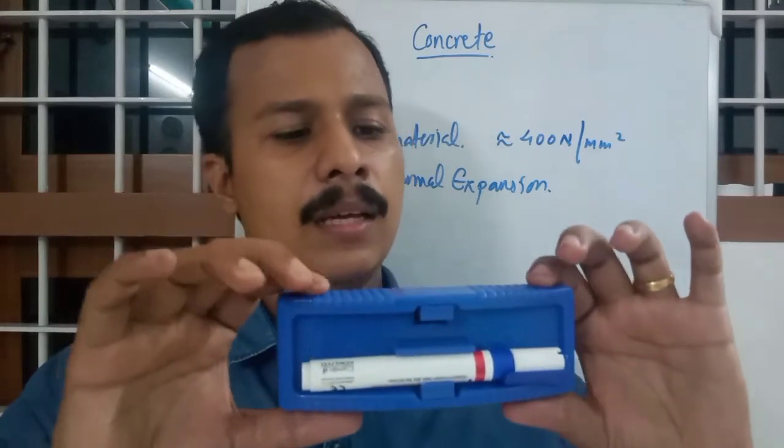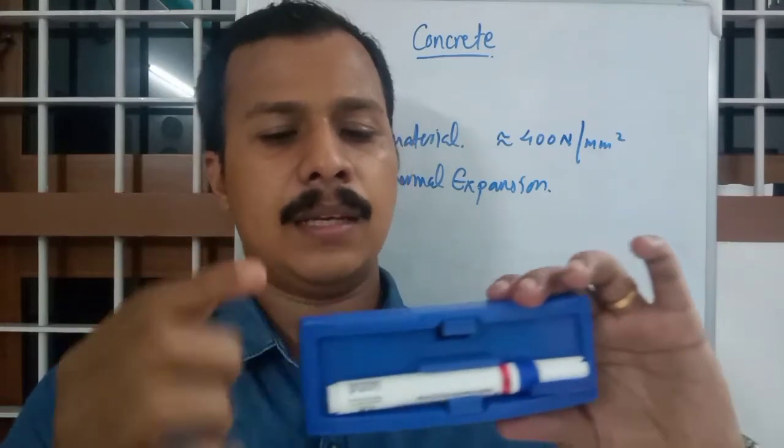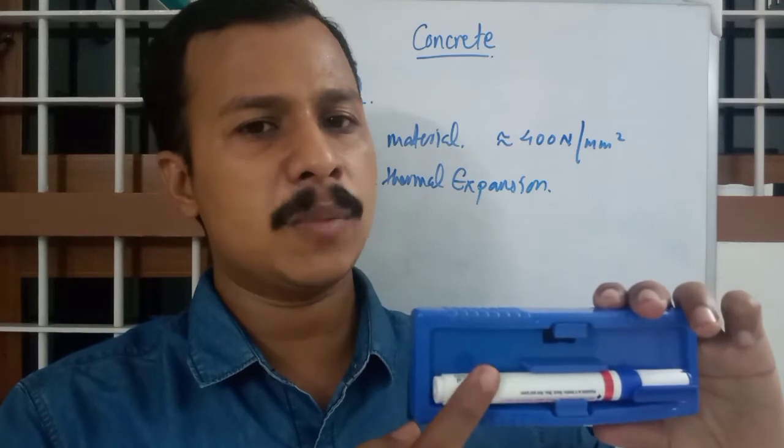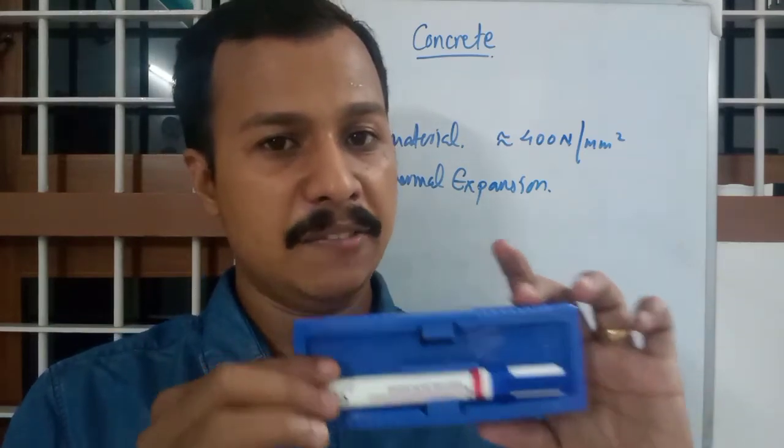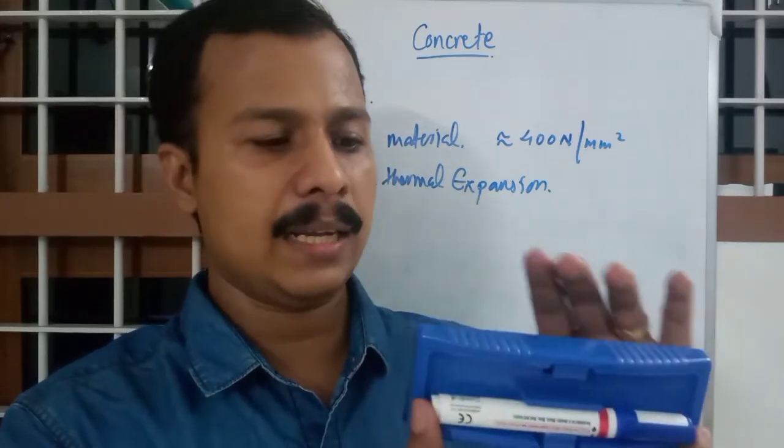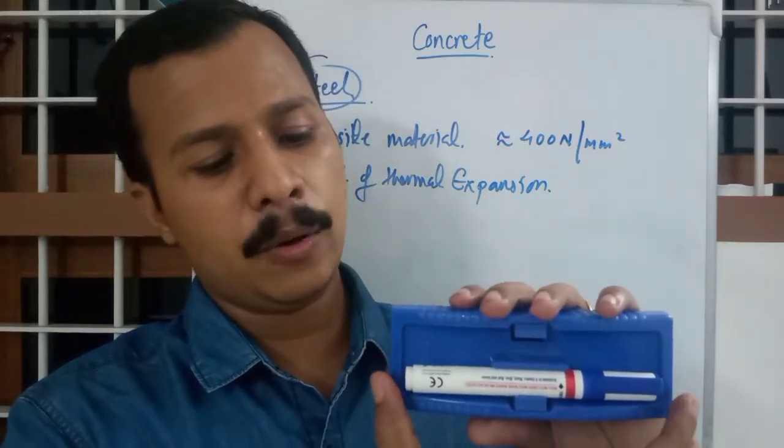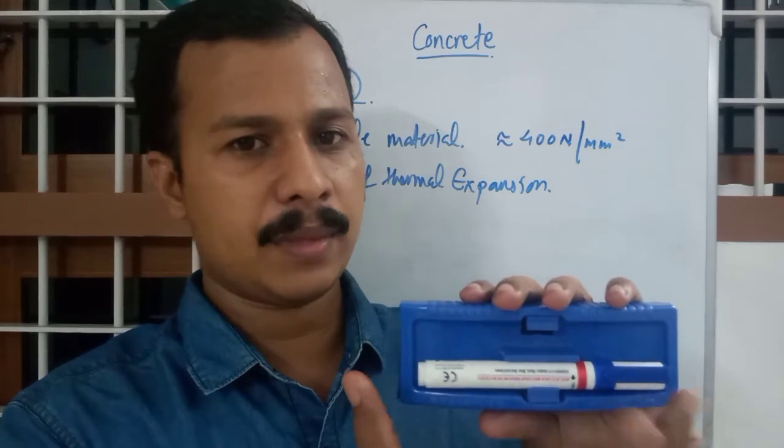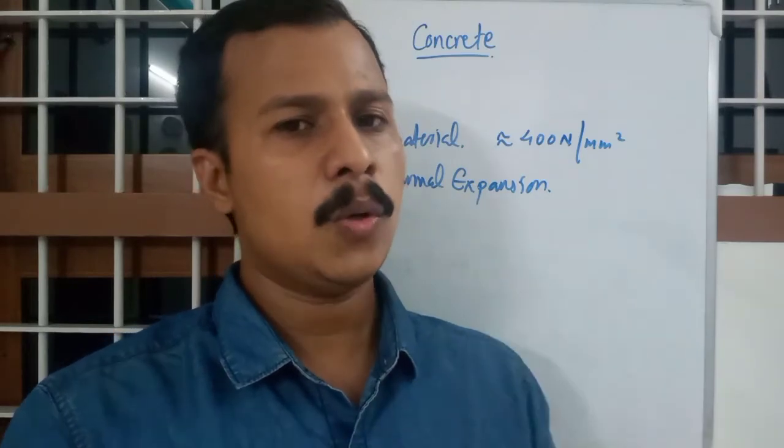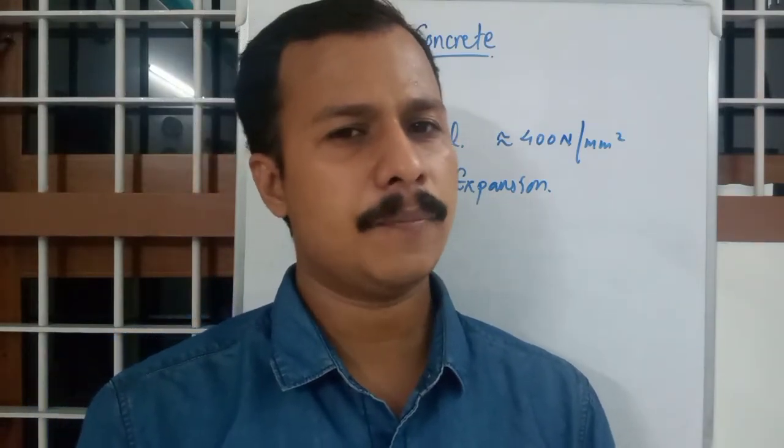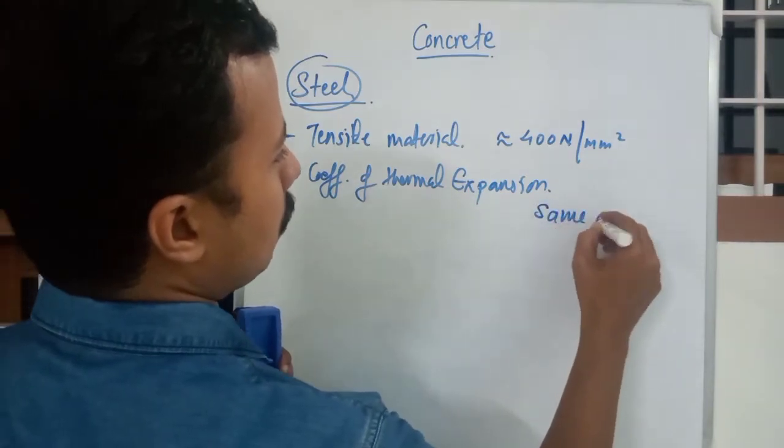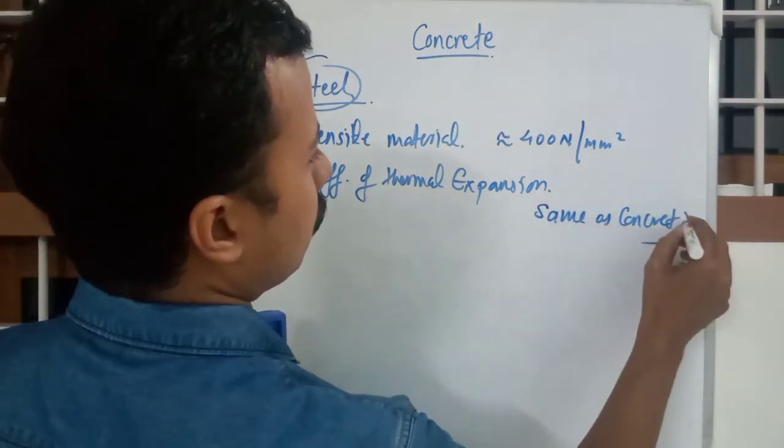So what happens when it heats? This will expand. The rate at which the concrete expands and the rate at which this steel reinforcement expands shouldn't be different. Because if it is different, if suppose coefficient of thermal expansion is larger for steel than concrete, this will elongate bigger and there will be breakage. If it is lesser, concrete will elongate more and there will be breakage. So for adequate bonding and load transfer, the coefficient of thermal expansion should be same as concrete.